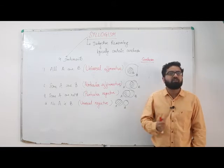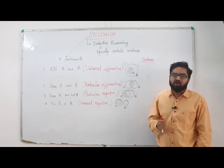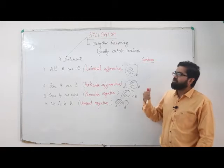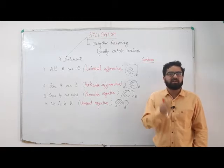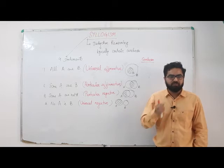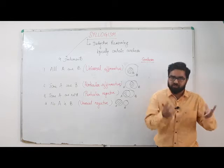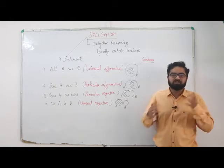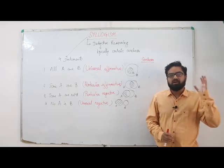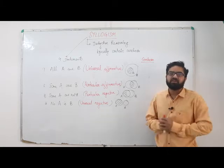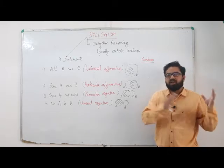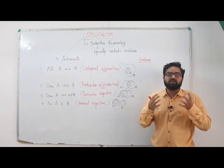Syllogism is part of deductive reasoning. Deductive reasoning is when we have logically certain conclusions - conclusions which are definitely true. For example, if we have A implies B, and B implies C, then we can always say A implies C. This is certain.